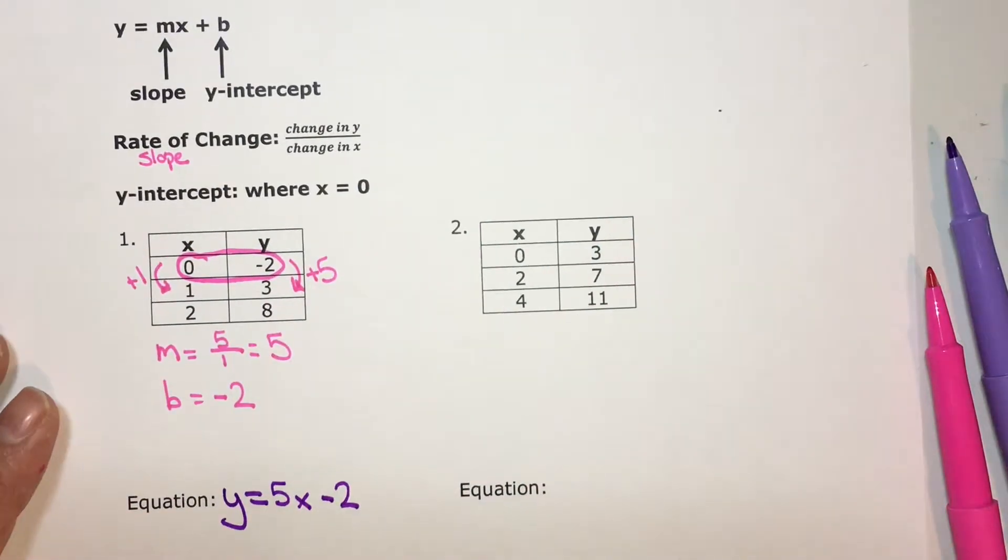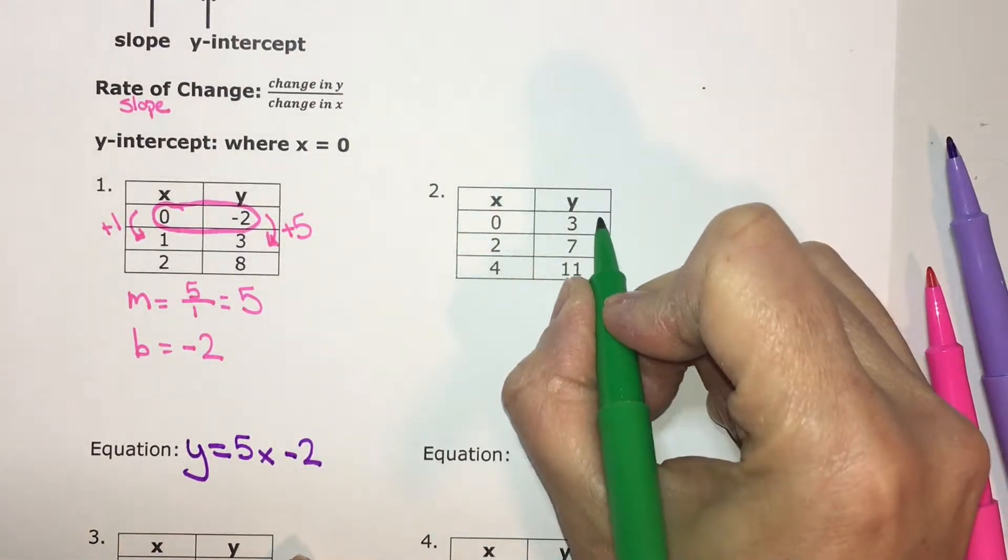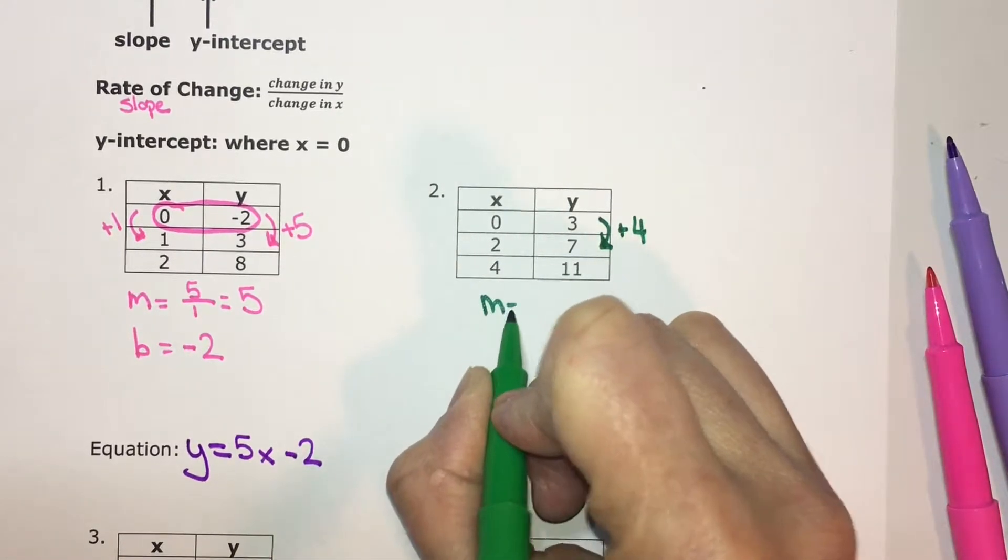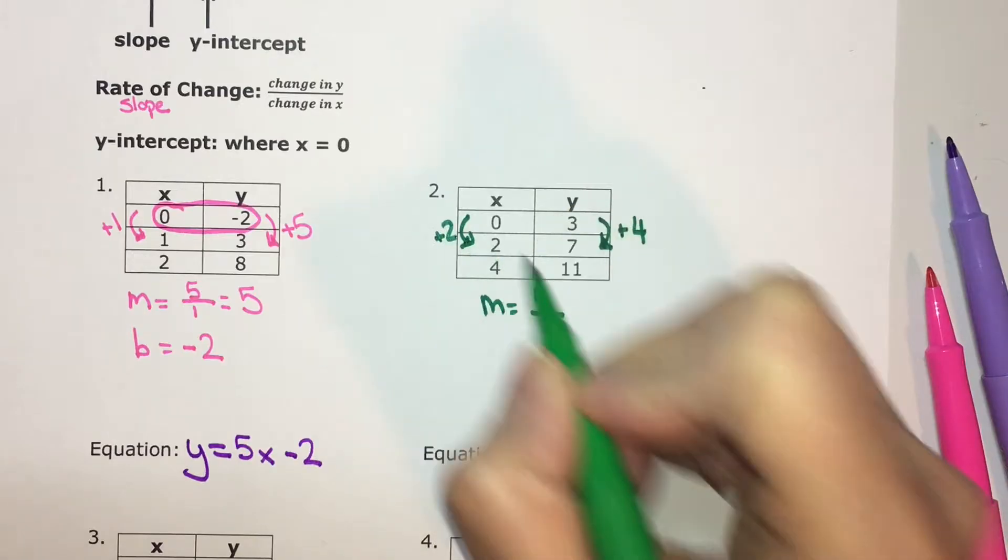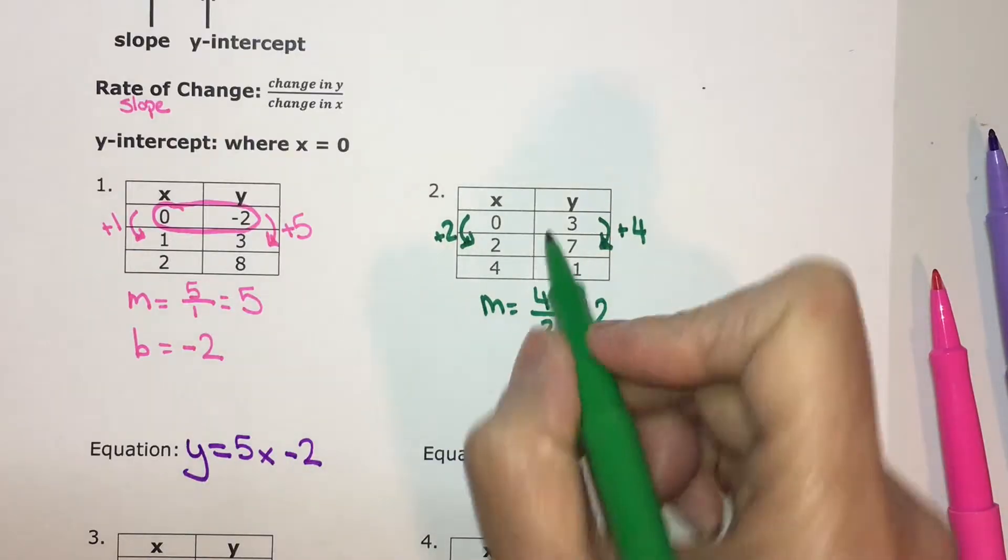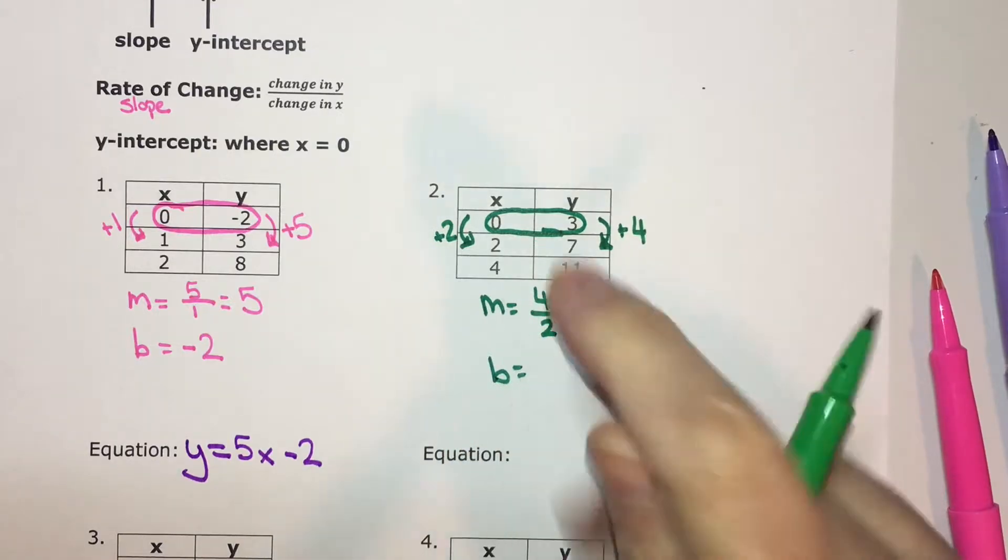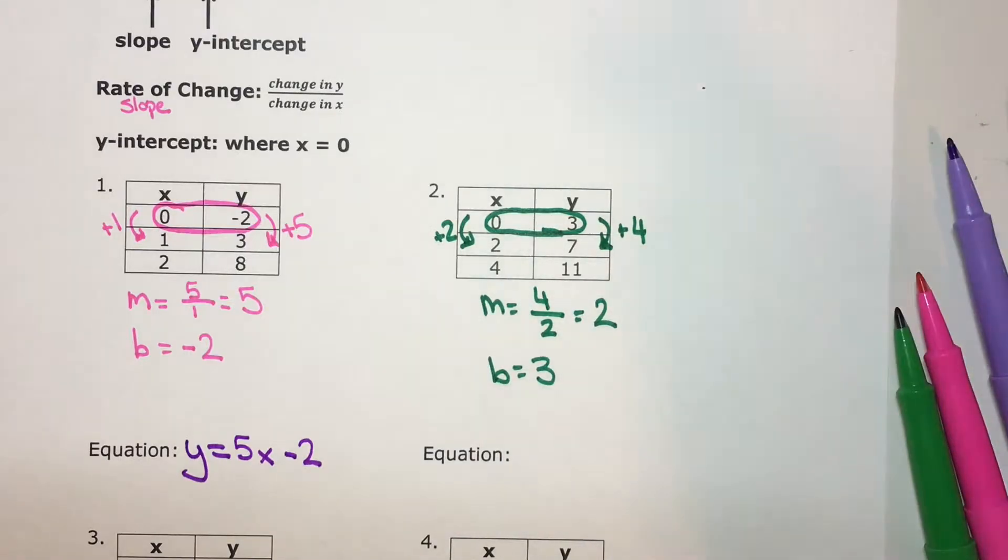There's the equation for that table. The next one's very similar, where we do change in y to go from 3 to 7. You add 4, so this is for the slope. Positive 4 over change in x. You add 2. 4 divided by 2 is 2. Then, the y-intercept, or b-value. This is where x is 0. The y-value is 3. So the equation is y equals 2x plus 3.